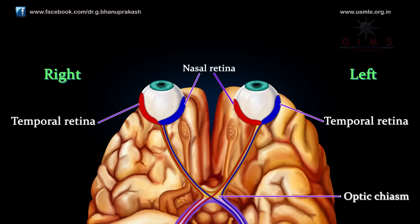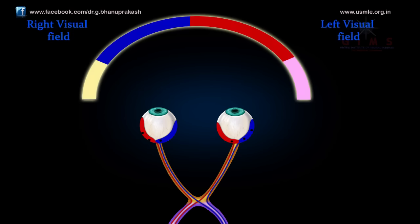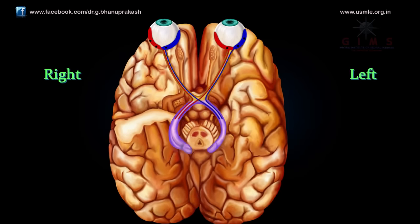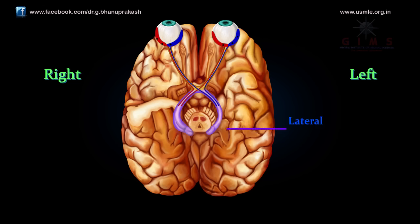After they pass the optic chiasm, the axons of the retinal ganglion cells are known collectively as the optic tract. Note that information from the left visual field is carried in the right optic tract, and information from the right visual field is carried in the left optic tract. The vast majority of axons of the optic tract terminate in the lateral geniculate nucleus, or LGN, which is the visual part of the thalamus. However, the axons of retinal ganglion cells also project to several other brain regions.